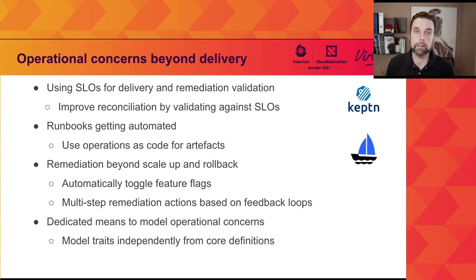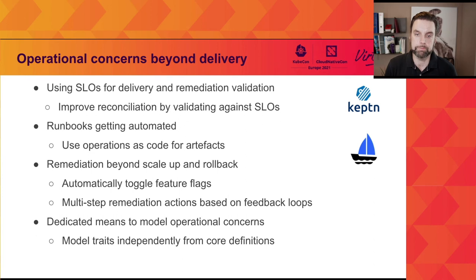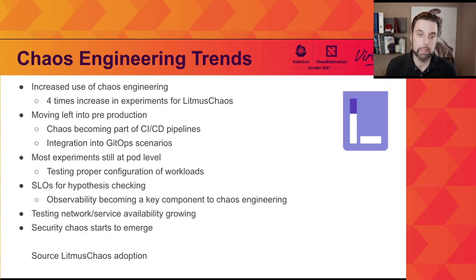There are other operational concerns that also tie into progressive delivery and GitOps scenarios. We have to manage how to run an application separately from the core application definition. The KubeVela project using OAM takes the approach of modeling this using traits. Traits define how a workload or service should be run in a certain environment and how it should be properly configured. Having this modeled explicitly and not as part of the core manifests increases flexibility, and it creates a separation of concerns between defining how a workload should be run and how a certain environment wants the workload to be run from an operational perspective.